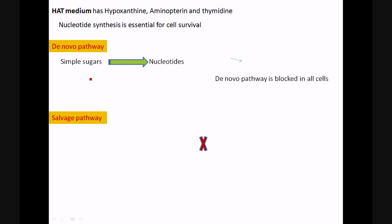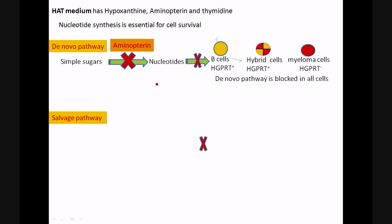From simple sugars, nucleotides are synthesized, and this aminopterin in HAT medium is capable of blocking this pathway. So this pathway is blocked in all three cells in the medium: B cells, hybrid cells, and myeloma cells.